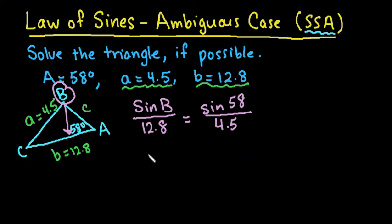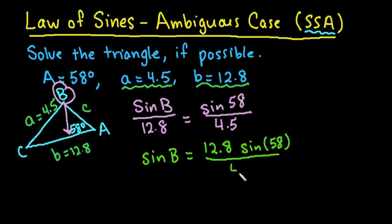So now if I go through and solve this, I end up with sine B is equal to 12.8 times the sine of 58 divided by 4.5. And remember that the rule is that sine of any angle has to be less than or equal to 1 or greater than or equal to 0.